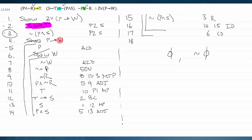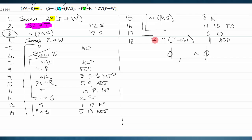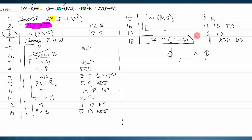I still need to close the rest of my show lines. I showed p arrow w by assuming the antecedent and successfully showing the consequent, so I can note a conditional derivation on that show line. The reason I wanted p arrow w was because what I really wanted to show was 'z or (p arrow w).' So I showed one disjunct and now I can add to it anything I want — getting 'z or (p arrow w)' via the addition rule.